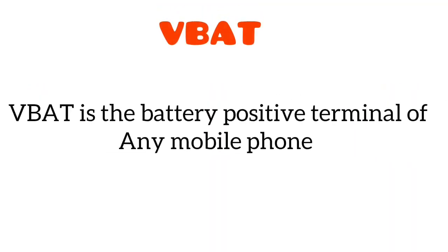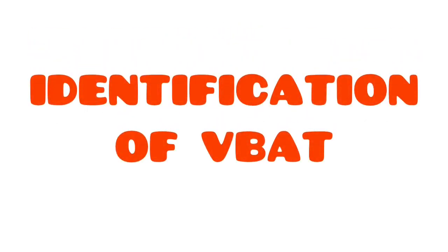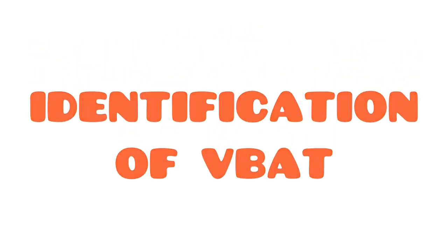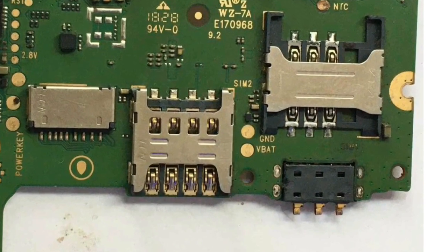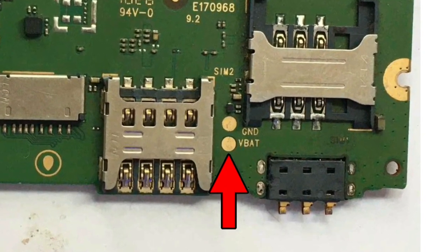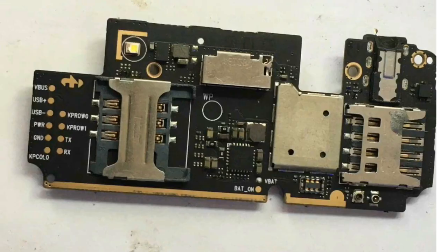So first on our list here is VBAT. VBAT is the positive terminal of the battery of any mobile phone. This is how to identify the VBAT on the logic board. As you can see, this is the VBAT — it's close to this battery terminal.